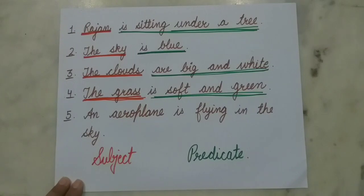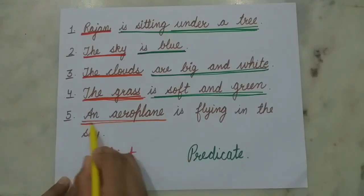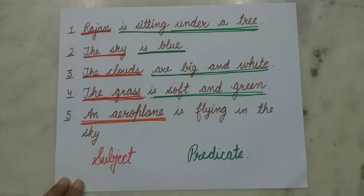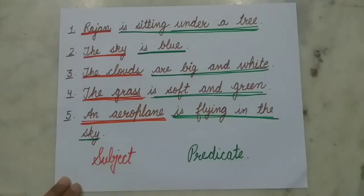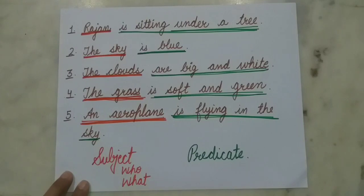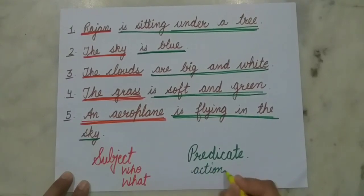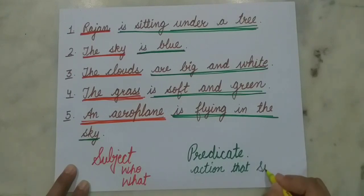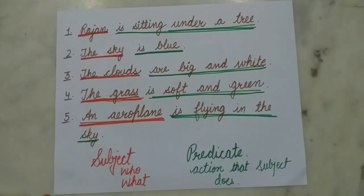'An aeroplane is flying in the sky.' Here, we are talking about an aeroplane, so an aeroplane is our subject. Whereas 'is flying in the sky' is our predicate. Let me remind you: subject is the part of a sentence that names who and what we are talking about, whereas predicate tells us the action that the subject does. I hope you understood these points. Practice subjects and predicates.